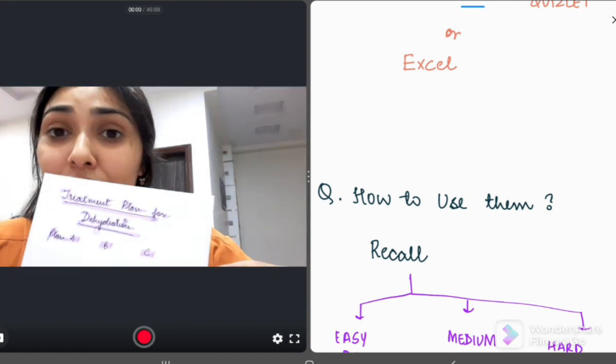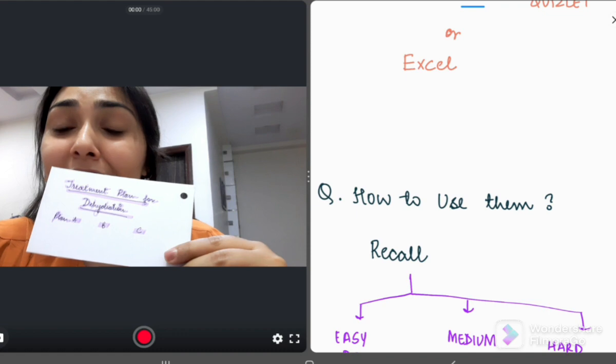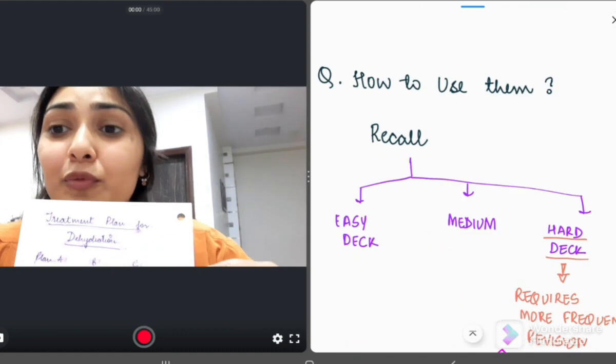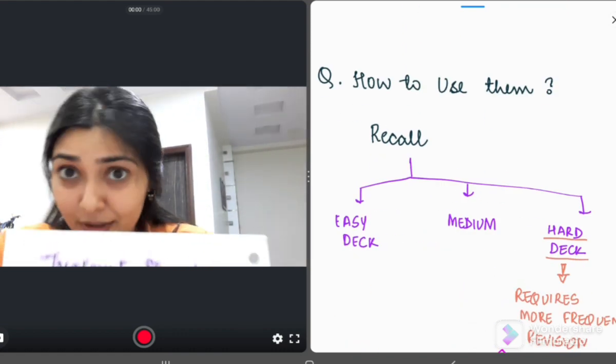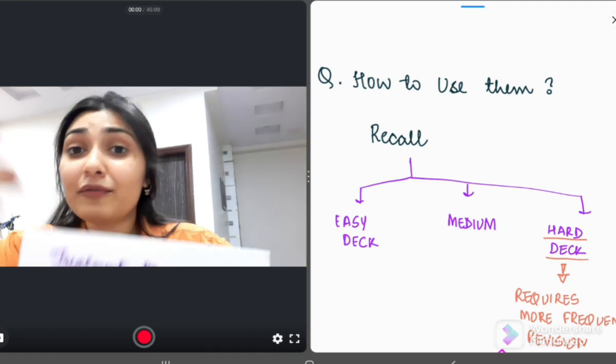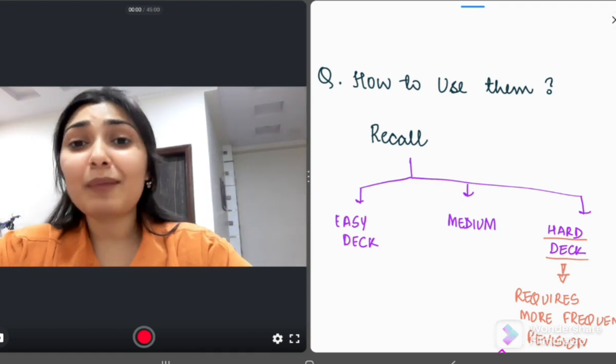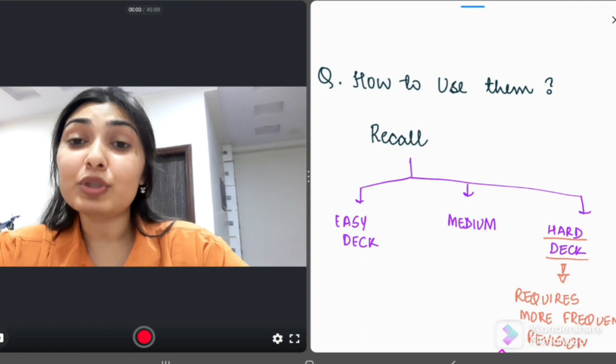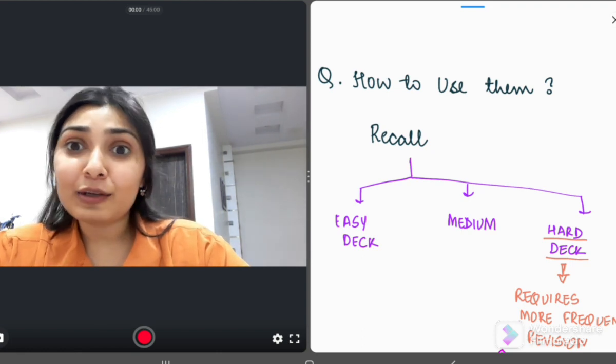So, whenever you use the card to recall the information, you divide these cards into three decks. One would be the easy deck that you recall each and every point about the topic. One would be a medium deck, like this one, where you know some things, but you're not that much confident that you slide it into the easy deck.